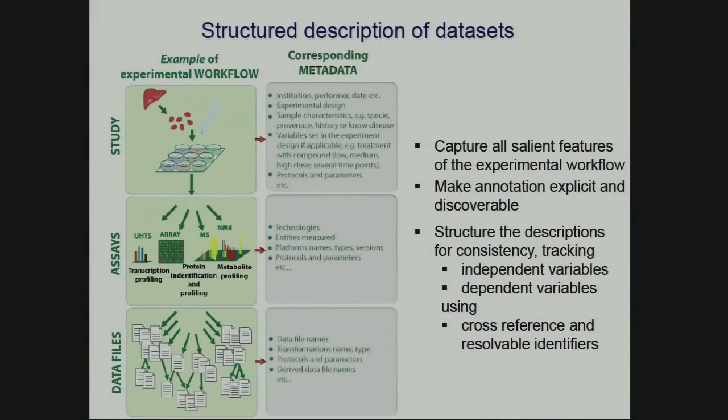I work in bioscience with a variety of data producers using different technologies, different types of samples, looking at different hypotheses. Here is an example of an experiment where liver is treated by a certain compound, and then different measurements are done using different technologies, producing a lot of data. What is really important is to capture all the steps of the experiment — what I call experimental metadata: where the sample comes from, what dose the compound was given, what technology and software were used. It's important to capture this salient information so you can potentially redo the experiment and analyse the data in the context of the experimental steps.